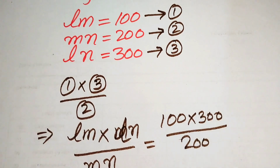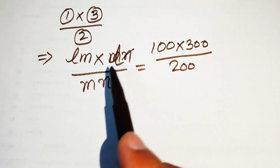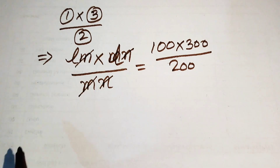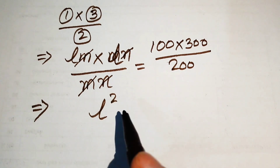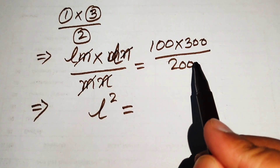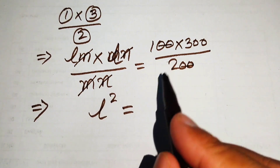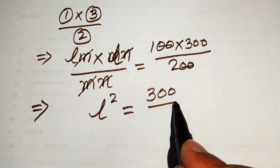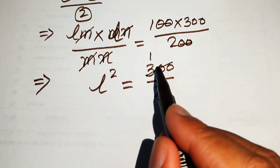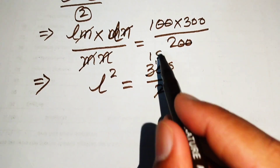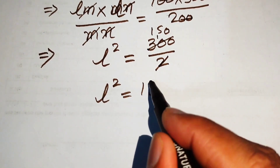It is 200. Now in the next step we need some simplifications. You see here this N is cancelled out by this N, and this M is cancelled out by this M. In the left-hand side, L multiplied by L becomes L squared. The two zeros cancel each other and we get 300 divided by 2. We divide 300 by 2 — carrying gives us 150.